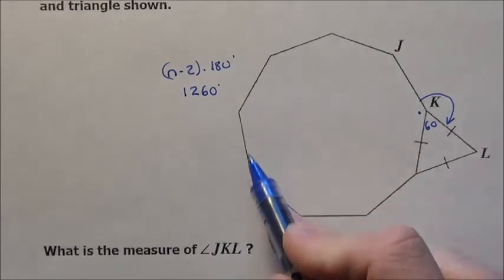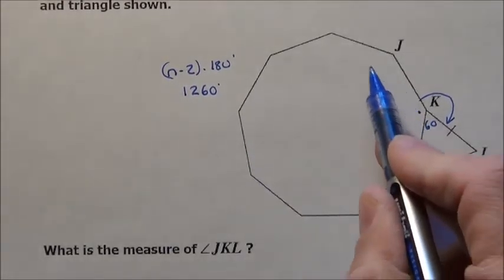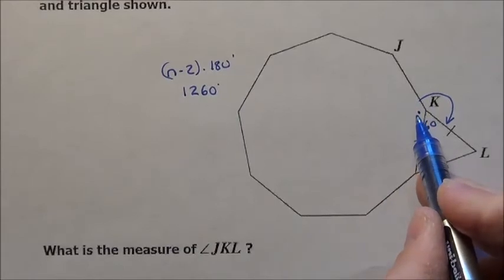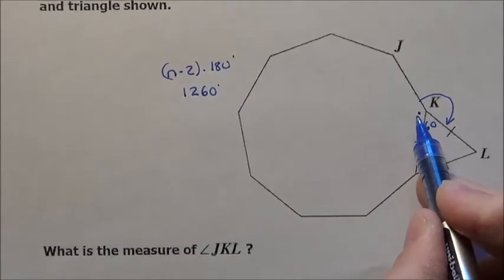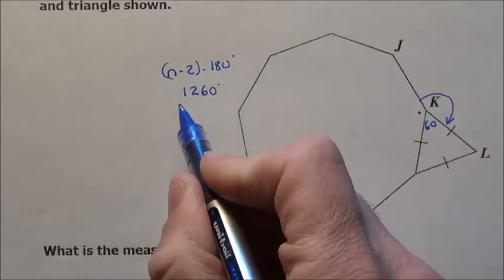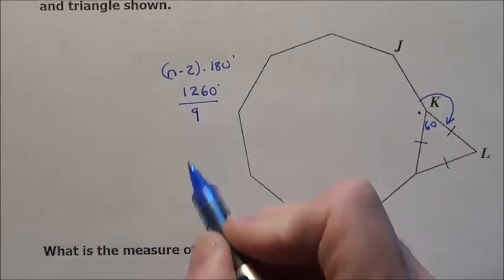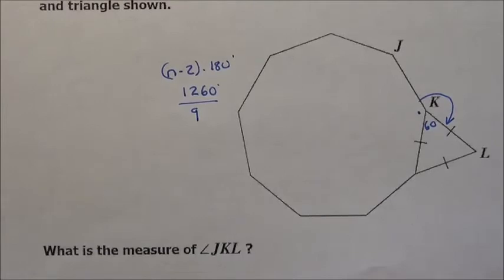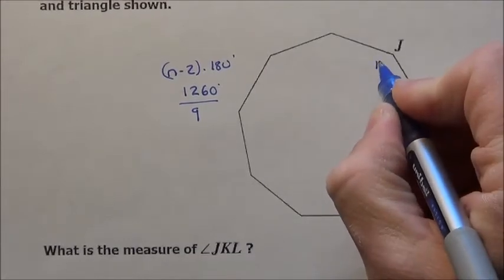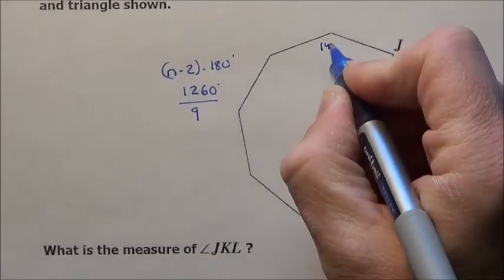So every one of these angles inside this big shape adds up to 1260. Now if each angle is the same though, how can we figure out what each angle is? Well if there's 9 angles and they all have to be the same and they all add up to 1260, let's just divide by 9. When you divide 1260 by 9, you get a perfect, beautiful 140 degrees for each one of these angles.